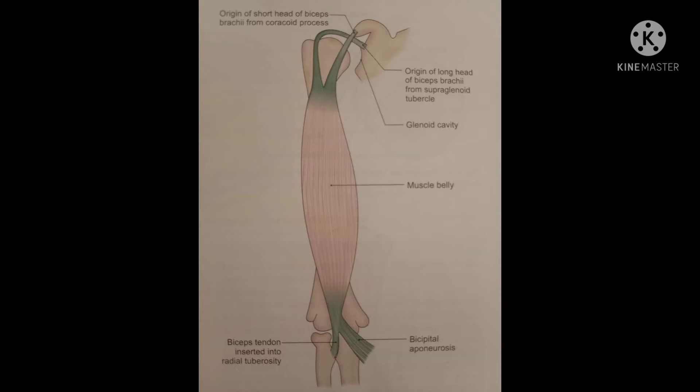...the tip of the coracoid process of the scapula, along with the coracobrachialis. Origin of the long head: it takes origin from the supraglenoid tubercle of the scapula as well as from the glenoidal labrum, from its anterior and posterior parts. The long head of the muscle is intracapsular.